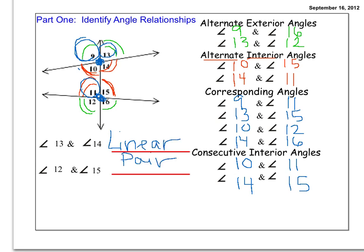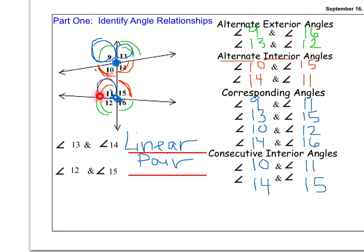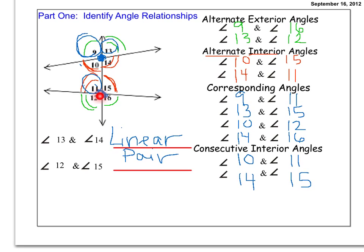And then to finish up, one more angle relationship, 12 and 15. Well, 12 and 15, they share a vertex. They don't share any sides. They look congruent. They're mirror images of each other. So sure enough, if you guessed that they were vertical, you were right.